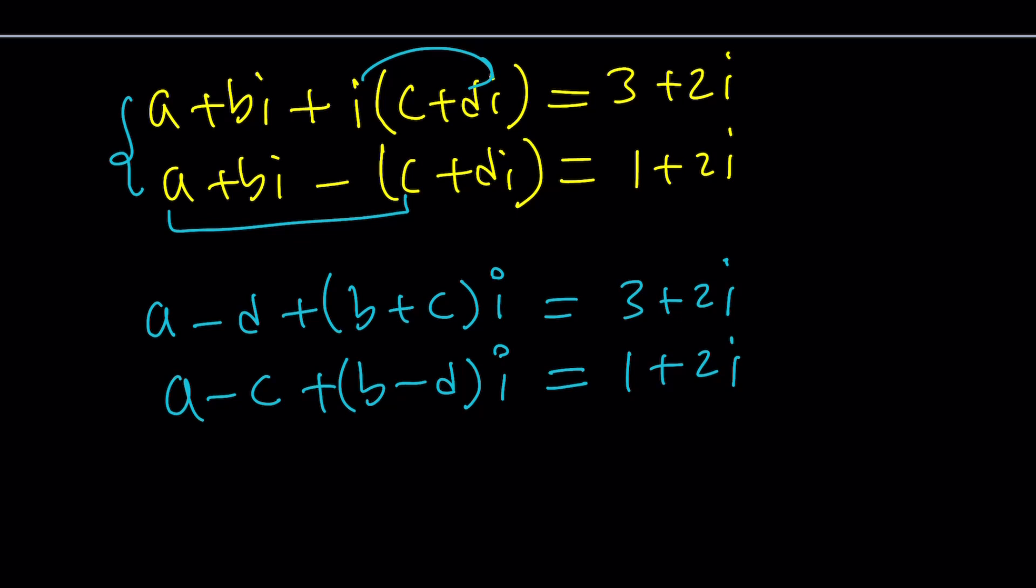So, we have a system and notice that if two complex numbers are equal, then the real parts are equal. So, this is supposed to be a 3 and imaginary parts, of course, have to be equal because if real parts are equal, they cancel out leaving us with the imaginary parts.